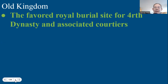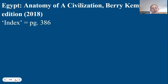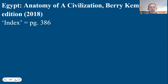Old Kingdom Giza, particularly for the Fourth Dynasty, seems to be the favored royal burial site for both the royal family and their associated courtiers and officials. If you purchase the Anatomy of a Civilization, 2018 edition by Barium, and go to the index, the entry for Giza is page 386, because that book talks a lot about Giza and has some very good graphics incorporating recent archaeological work.